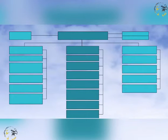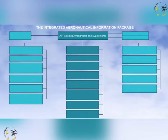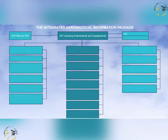It consists of the aeronautical information publication, AIP, and an amendment service, supplements to the aeronautical information publication, NOTAMs and pre-flight information bulletins, aeronautical information circulars, AICs, checklists and summaries.